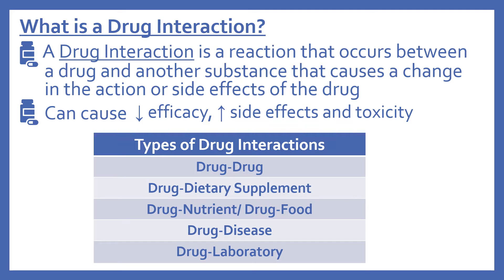We'll begin with what is a drug interaction. A drug interaction is a reaction that occurs between a drug and another substance that causes a change in the action or side effects of the drug. Drug interactions can cause a decrease in efficacy, or how well the drug works, and an increase in side effects and toxicity of a drug. And there are different types of drug interactions, which we'll look at in more detail with some examples.